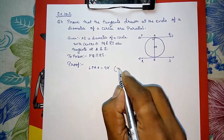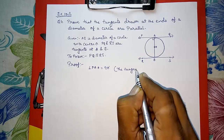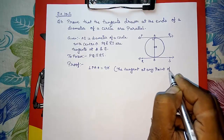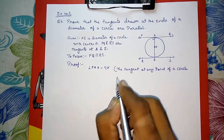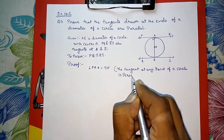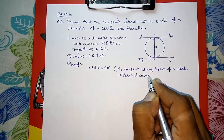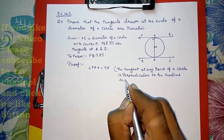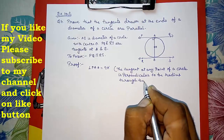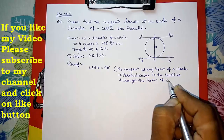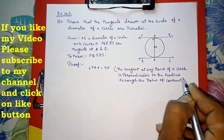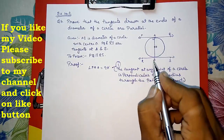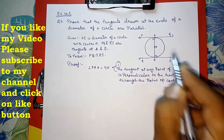The reason is: the tangent at any point of a circle is perpendicular to the radius through the point of contact — Theorem 10.1. In an examination, you must write this full statement. Similarly, RS is also a tangent and OB is a radius, so angle SBO is also equal to 90 degrees — Result 2.